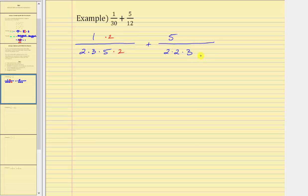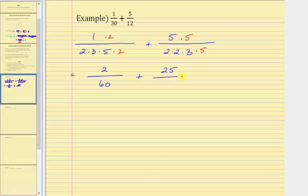Moving to the factor of 3, both denominators already contain one factor of 3. Looking at the factor of 5, the first denominator contains one factor of 5 and the second contains zero, so we multiply the numerator and denominator of the second fraction by 5. The LCD contains two factors of 2, a factor of 3, and a factor of 5. One thirtieth is equivalent to 2 over 60, plus five twelfths is equivalent to 25 sixtieths. Now that we have a common denominator we can add. The denominator remains 60 and the numerator is two plus 25, which is 27. The sum is 27 sixtieths.